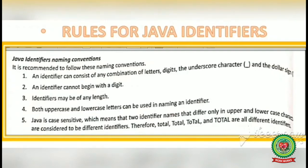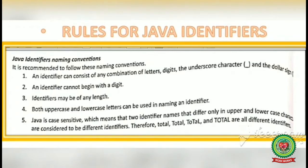Rule 4: Both uppercase and lowercase letters can be used in naming an identifier. The name you choose for a variable or class may be in uppercase, lowercase, or a combination of both. Rule 5: Java is case sensitive, which means two names that differ only in uppercase and lowercase characters are considered to be different identifiers.